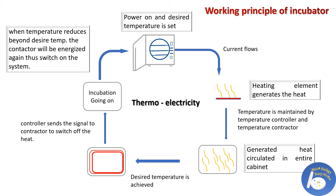The incubator works on a thermoelectricity system. Once the power is on and the desired temperature is set, current flows into the system, the heating element generates heat, and this temperature is maintained by a thermostat or temperature controller. The generated heat circulates throughout the entire cabinet. When the desired temperature is achieved, the temperature controller sends a signal to the contactor to switch off the heat. When the temperature drops below the desired level during incubation, the contactor energizes again, switches the system on, and current flows so the heating element generates heat again — this is how the temperature gradient is maintained.